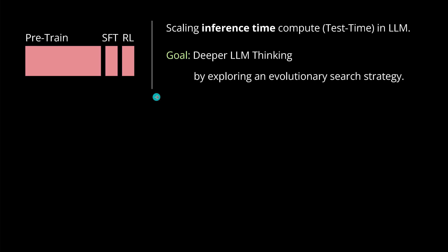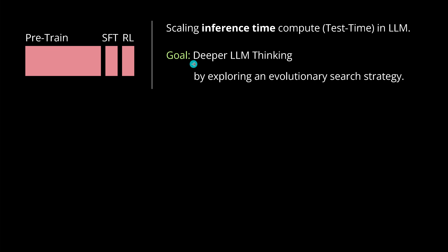So, let's talk about what is happening here scientifically. We are not in the training — we are at inference time. Google wants, like the o1 or o3 models by OpenAI, to optimize performance at test time by scaling inference time computation. The goal is a deeper thinking process of our LLM when we wait 1, 2, 3, 5 minutes, maybe half an hour or an hour for the answer. And it is now implemented by exploring an evolutionary search strategy.